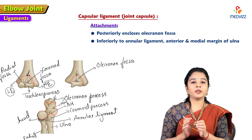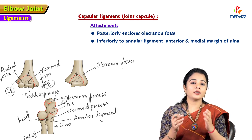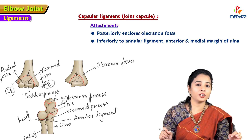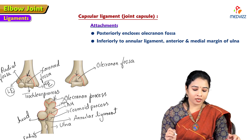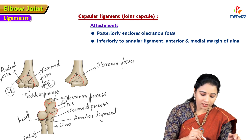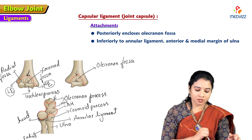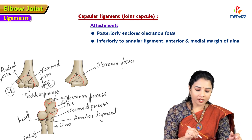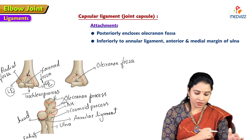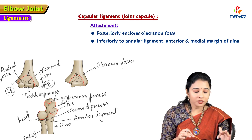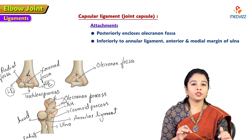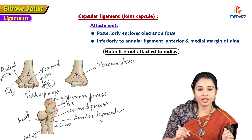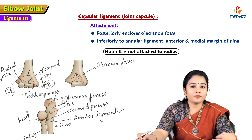The annular ligament surrounds the head of the radius and keeps the head of the radius together with the radial notch of the ulna to form the superior radio-ulnar joint. The capsule attaches to the margins of the annular ligament and also to the margins of the olecranon process of the ulna. An important point to note: the capsule is not attached to the radius itself, but to the annular ligament of the radius.